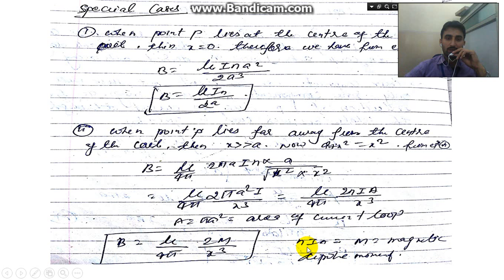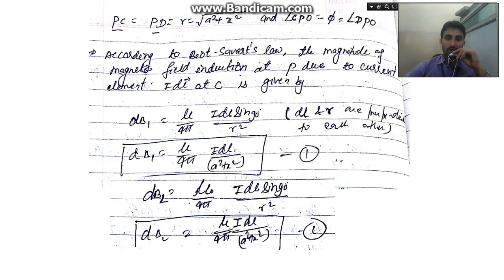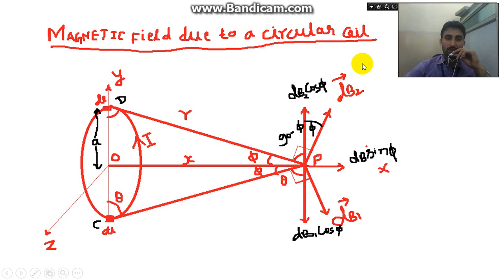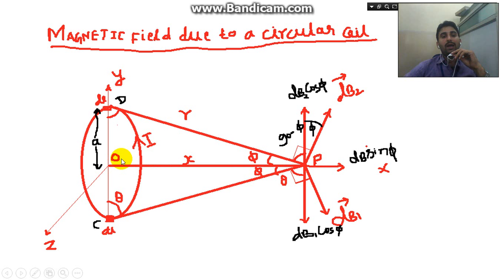This completes the derivation of the magnetic field due to a circular coil at any point P at distance X from center O. We also considered two special cases: when point P is at the center (X = 0), and when point P is very far away from the center (X >> a). Thank you.